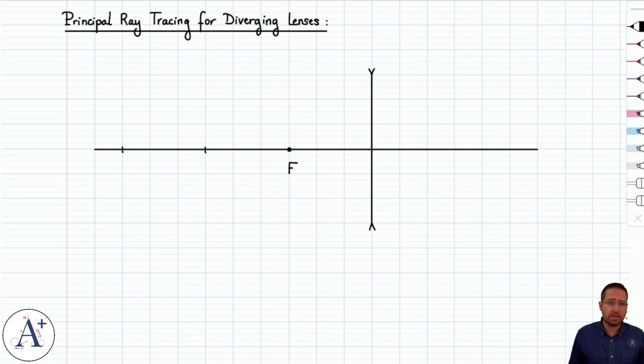It turns out that in the case of a diverging lens, much like a convex mirror, it doesn't matter how far you place the object from the lens, you always get the same type of image.